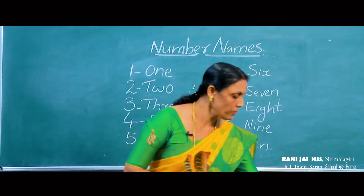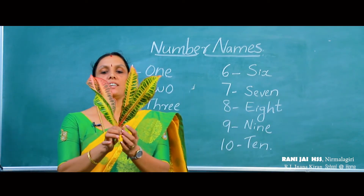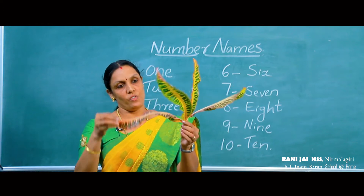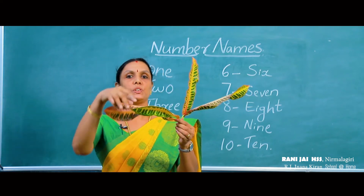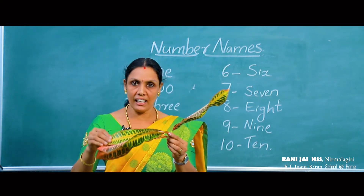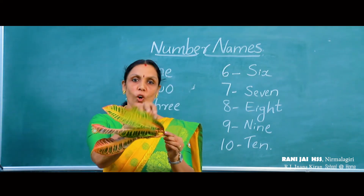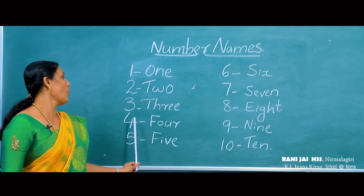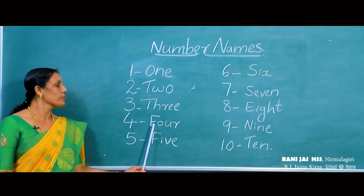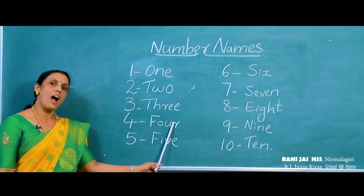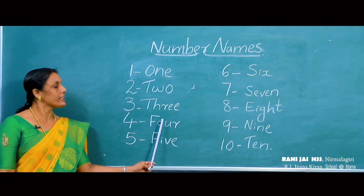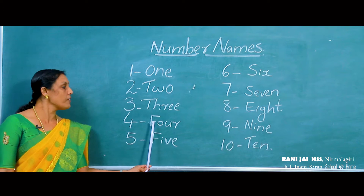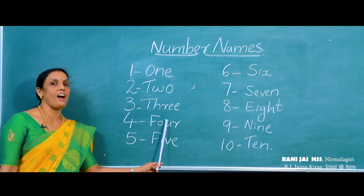Look here. How many leaves in my hand now? Count it. 1, 2, 3, 4. The number name of 4 is F-O-U-R. Spell the number 4 as F-O-U-R.